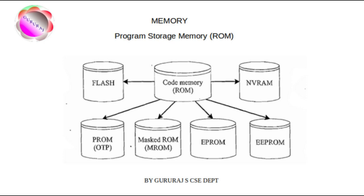The next type is EPROM — erasable programmable read-only memory. OTPs are not useful for development purposes, since during the development phase the code is subject to continuous changes and using an OTP each time is not economical. EPROM gives the flexibility to reprogram the same chip, but requires an ultraviolet (UV) eraser for 20 to 30 minutes, which is a very time-consuming process. Next is EEPROM — electrically erasable programmable read-only memory — where the information can be altered using electrical signals at the register or byte level, erased and reprogrammed in-circuit, and includes a chip erase mode that can erase in a few milliseconds.